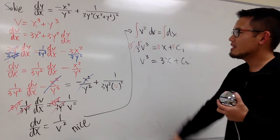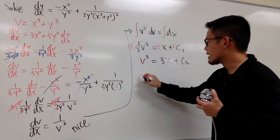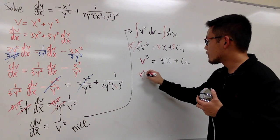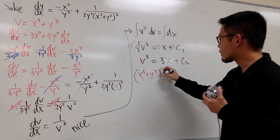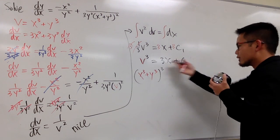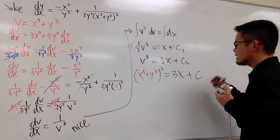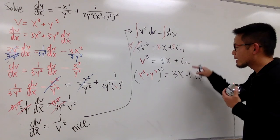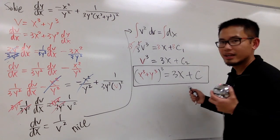At the end, v is that, so once you substitute, v to be, let me just write this down, x to the third power plus y to the third power, and then this is to the third power, right? On the right-hand side, we have 3x plus c2. But since I'm done, I'm not going to write down subscript. This right here is the answer. And that's it.